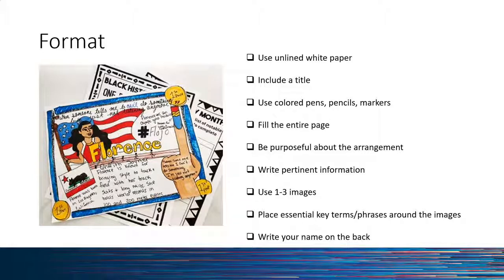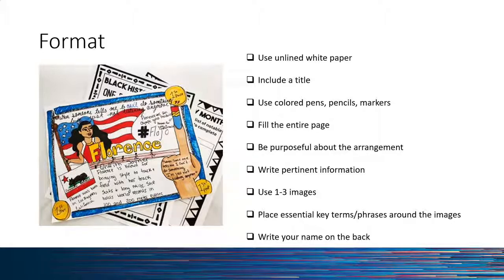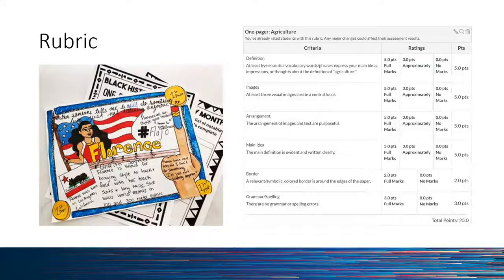Requirements: use plain white paper, include a title, use colored pencils or markers or crayons, fill the entire page, think about your arrangement so there's planning behind it, use information from class, research, or personal experience, use one to three main images, and place essential key terms and elements clearly. It's basically a simplified infographic. Students write their name on the back — intentionally.